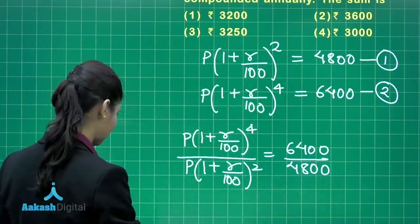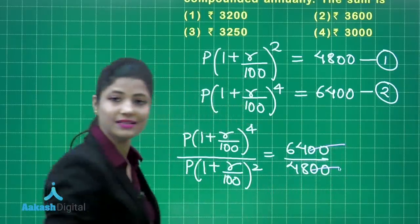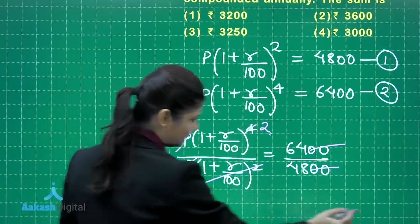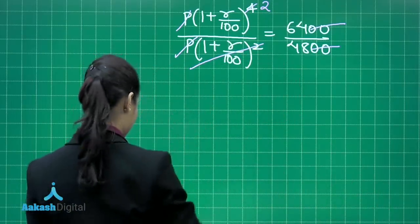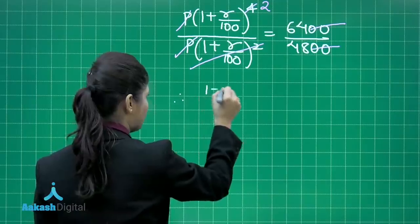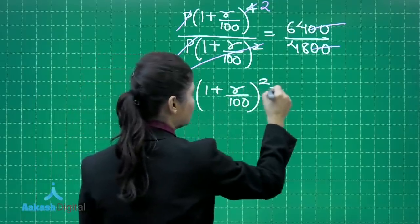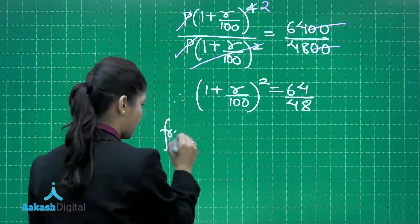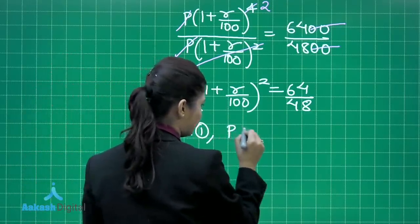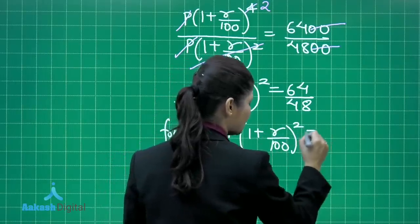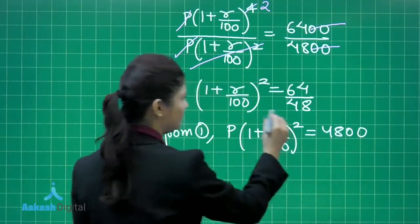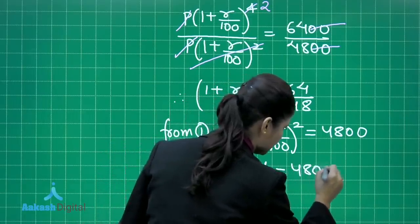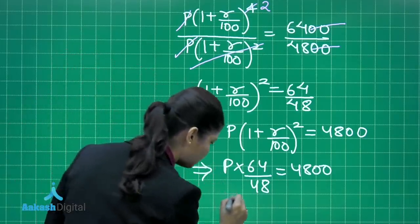Simplifying, p cancels and (1 + r/100)² = 64/48. This value can be substituted back into equation 1: p × (64/48) = 4800. Solving this equation gives the value of p. From equation 1, p × (1 + r/100)² = 4800, and substituting 64/48 for (1 + r/100)², we get p × 64/48 = 4800.